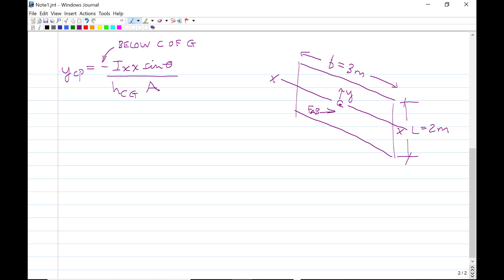So to calculate YCP, we need to calculate the second moment of area. We need to calculate the second moment of area about a horizontal axis, this axis here, xx, which passes through the center of gravity. And you should recall that Ixx is the width of the surface for a rectangle times the length cubed divided by 12. And so we have a gate that's 3 meters into the page, 2 meters high. So that's 3 meters times 2 meters cubed divided by 12. And that works out to 2.0 meters to the 4th.